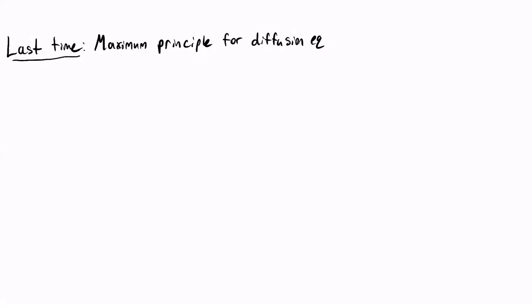For the last lecture we spent the majority of the time talking about the maximum principle for the diffusion equation. What I want to do to begin this lecture is quickly review what the maximum principle is and talk about one important application of it. After a little bit of related discussion, we're going to move on and start talking about how to solve the diffusion equation, because at this point we've only discussed some very important but abstract properties of solutions without discussing how you can actually find a solution. That will take quite a long time and move into the second lecture for this week as well.